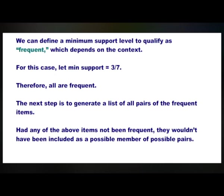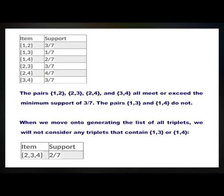The next step is to generate the list of all pairs of frequent items. Had any of the above items not been frequent, they would not have been included as a possible member of possible pairs. In this way, Apriori prunes the tree of all possible sets. In the next step, we again select only those pairs of items which are frequent. Look at this table. The first pair {1, 2} has support of 3 out of 7. The next pair {1, 3} has support of 1 out of 7, and so on through the remaining pairs.